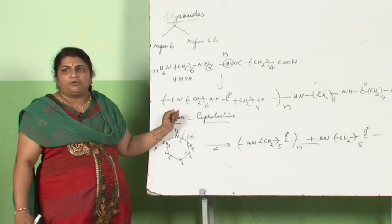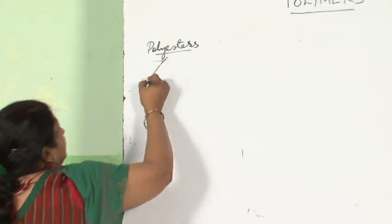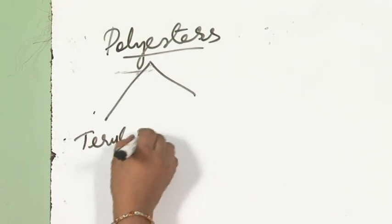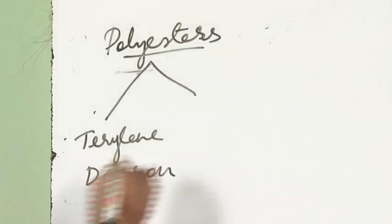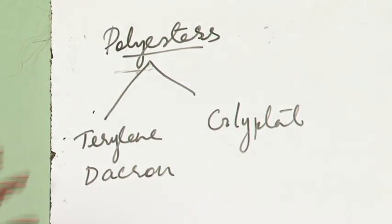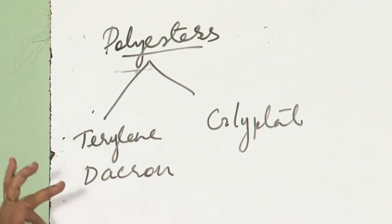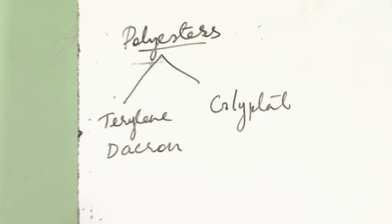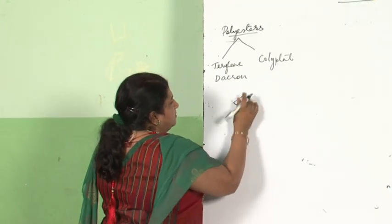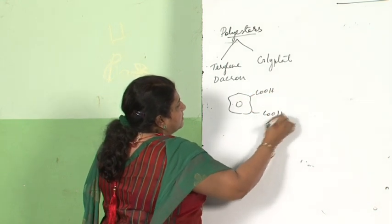Now we come to polyesters. Two polyesters need to be studied: terylene (Dacron) and glyptol. Terylene or Dacron is made from terephthalic acid and ethylene glycol. The monomer is terephthalic acid — a para-dicarboxylic acid with a benzene ring.